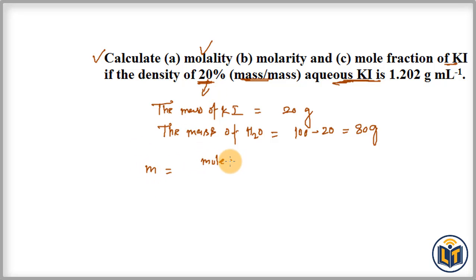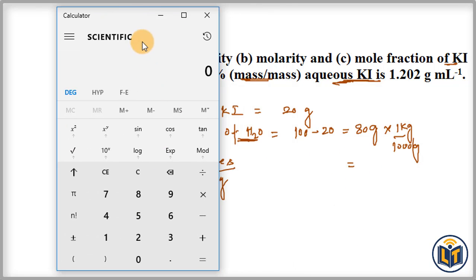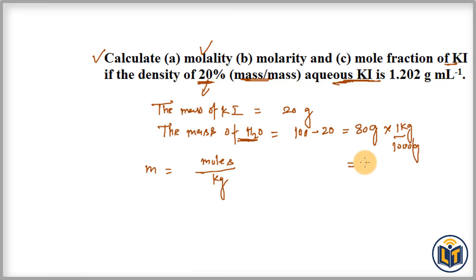The solvent is H₂O and it is given in grams. We can convert it to kg — 1 kg has 1000 grams — so we divide: 80 divided by 1000, which gives us 0.08 kg. This is the mass of H₂O in kg.